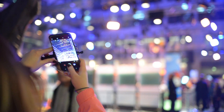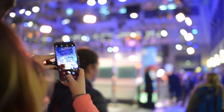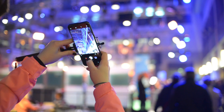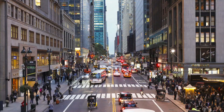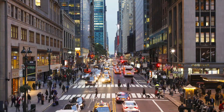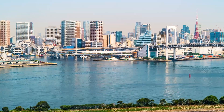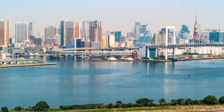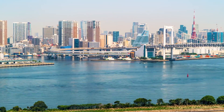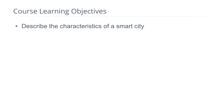In this course, we will review a number of smart city projects and developments, so by the end of this course you'll learn how digital and information technology is changing the way we plan, design, build, govern and live in cities. We start this course by defining smart city and describing the characteristics of a smart city.